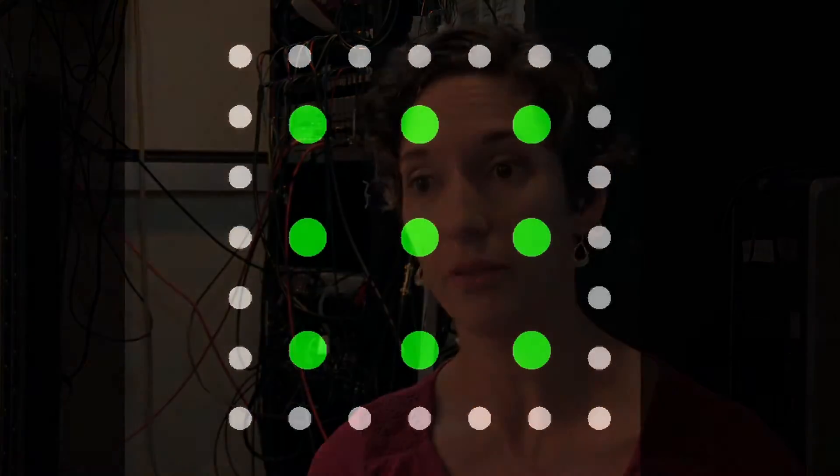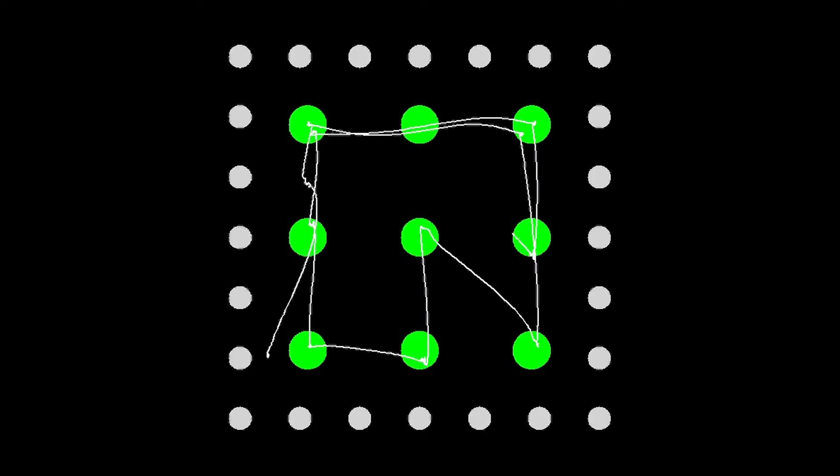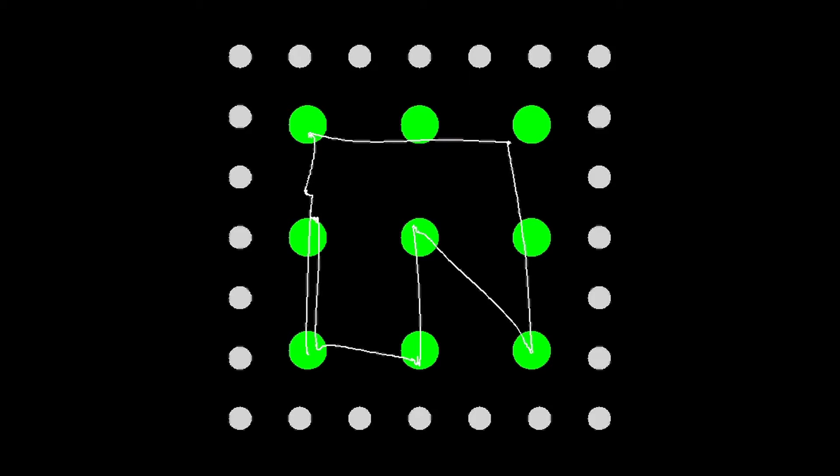In this study we were interested in having animals form their own habits similar to how you and I would form habits. The way we did this is we gave animals a grid of nine dots, and all they had to do was look around this grid to find a rewarded target. They had a lot of time to do this and could look around in whatever way they wanted to. So what the animals did is they made their own habit, they made their own way of getting to work as if work was finding that rewarded dot.